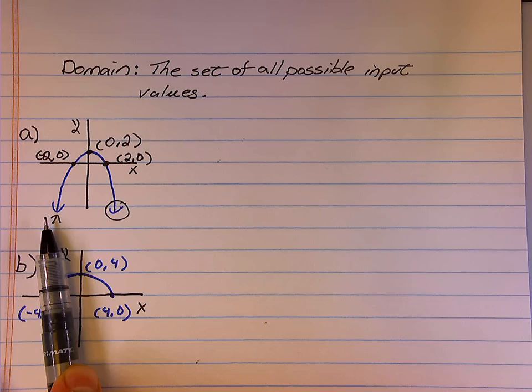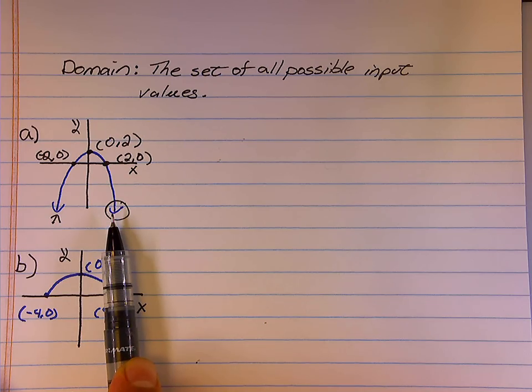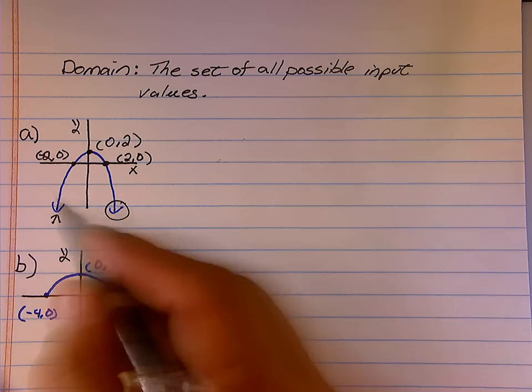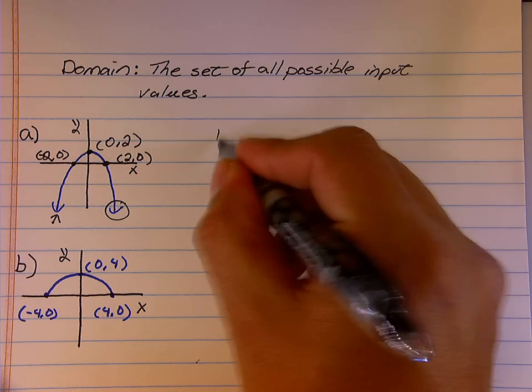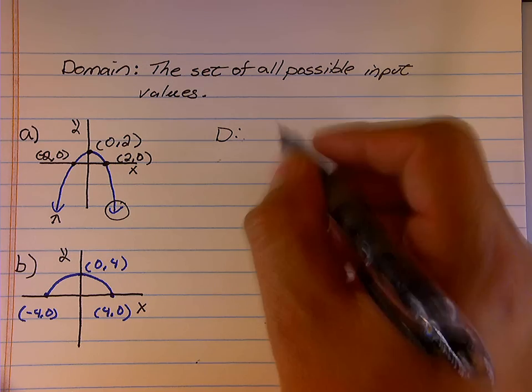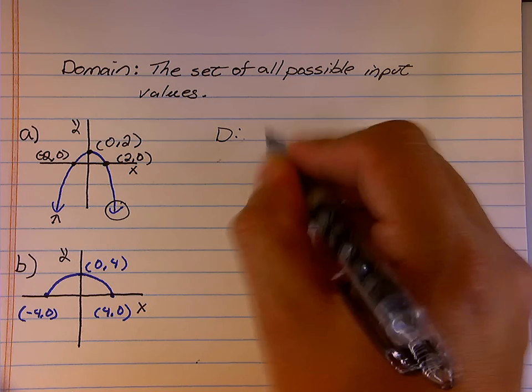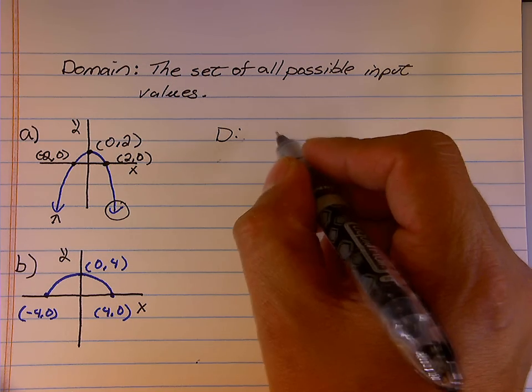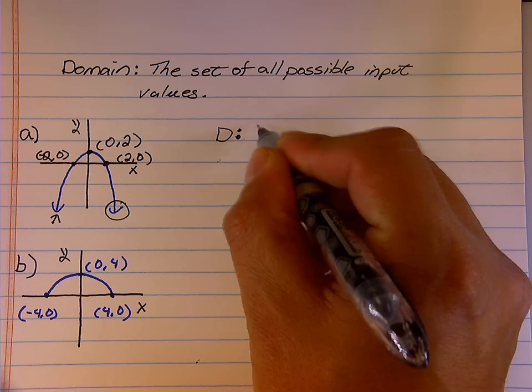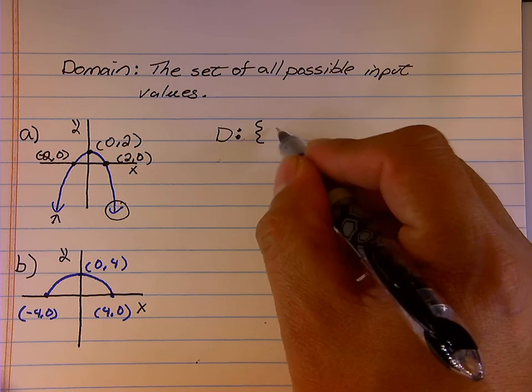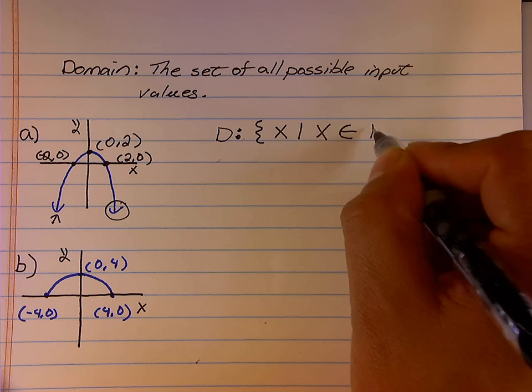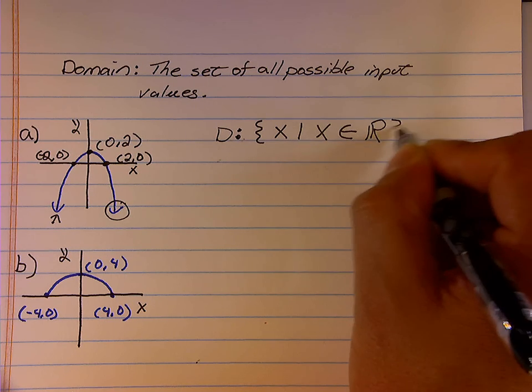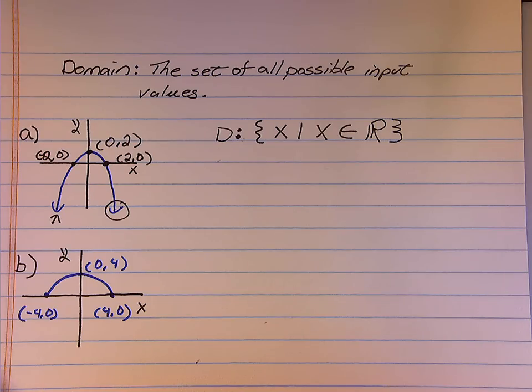This one goes on to the left forever and also goes to the right forever. So we talk about the domain. How far to the left can we go? Well, we can go forever to the left and forever to the right, which means my domain is the set of all real numbers. I'm going to write this in set notation. So the domain is the set of x where x is an element of the real number system. This is just a different way of saying that x can be any real number.